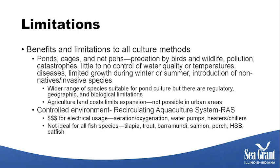There are benefits and limitations to all different aquaculture culture methods. With ponds, cages, and net pens, you get predation by birds and wildlife. They're open to the environment, so they experience pollution — specifically PCBs found in soils and methylmercury dissolved in water. They're also prone to catastrophes from floods, wind storms, and earthquakes, and you have little to no control of water quality or temperatures. When fish are held in wild environments, they're also prone to disease outbreaks — disease is always present and more likely to spread due to concentrated conditions.